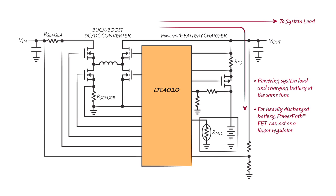This function is called instant-on because it provides a voltage to the output that is higher than the voltage of the heavily discharged battery as soon as an input source is available.